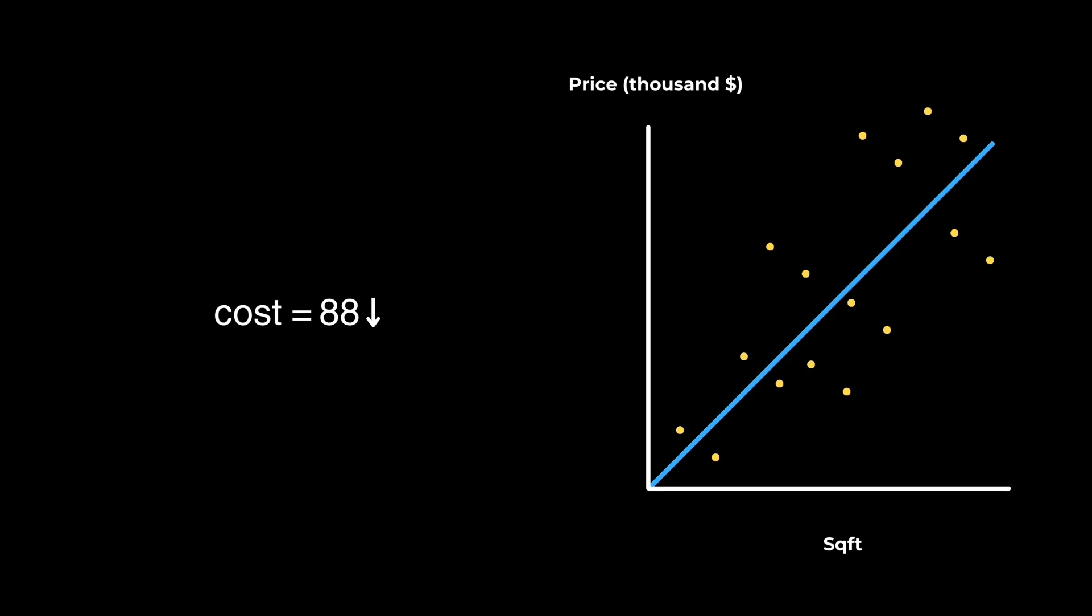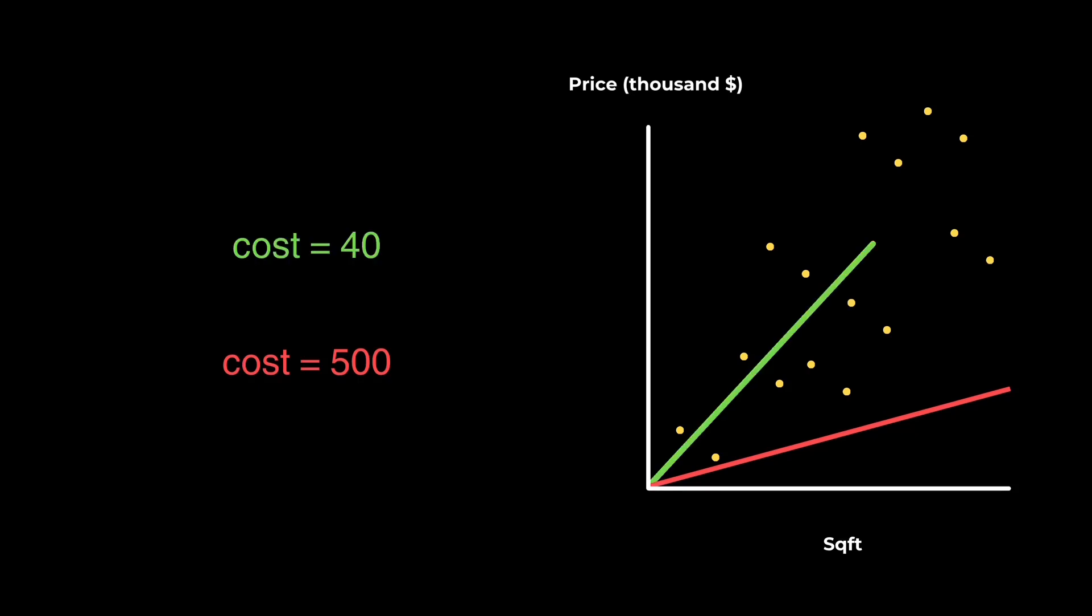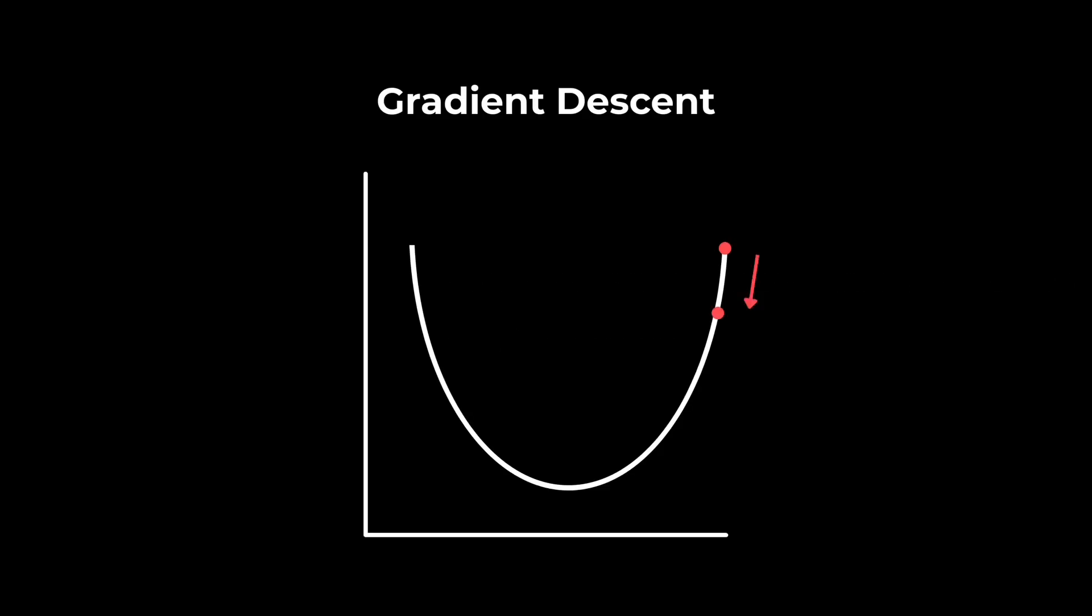So now we understand cost functions. But remember, our goal is to minimize our cost. This line will obviously produce a larger cost than this one. In other words, it's a far less accurate model. But how do we draw the line that minimizes our average cost? That's where our optimization algorithm comes in. One of the most common optimization algorithms is called gradient descent. It involves a bit of calculus, but the idea is pretty simple.